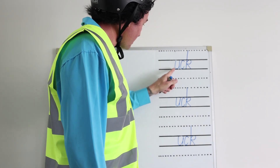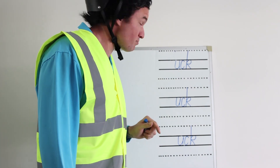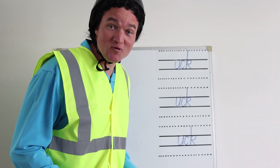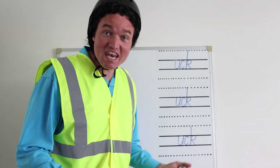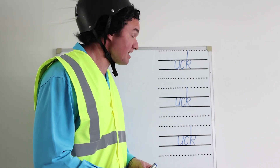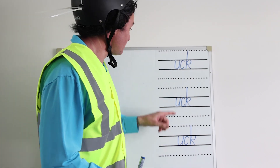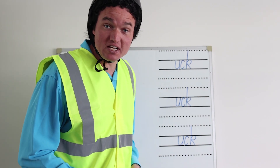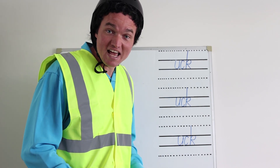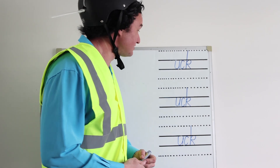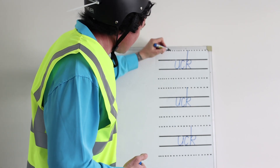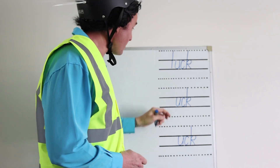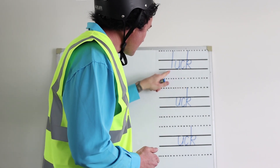Now that we have U and CK, we know that makes the 'uck' sound. What words could we write? We could make the word luck. To make the word luck, I need the L sound. Do you know which letter makes the L sound? It's the letter L. This is how we write the letter L. Start up here, and go straight down. Now we have L-uck. Luck.